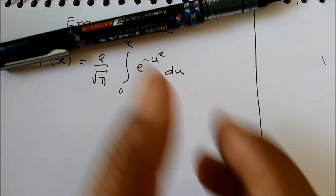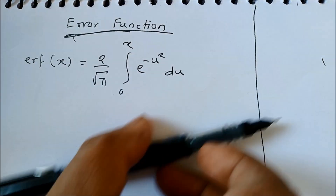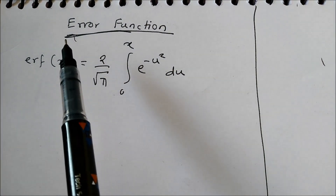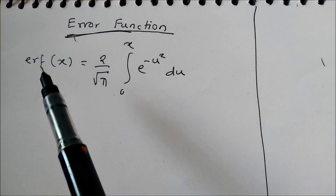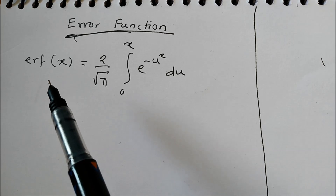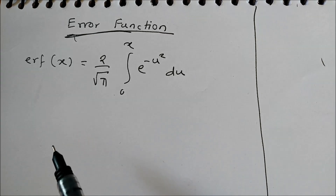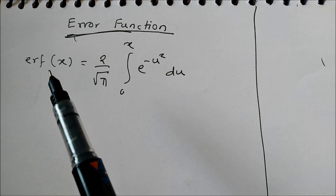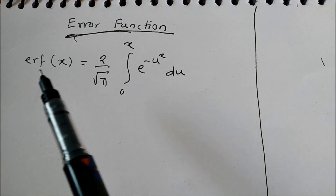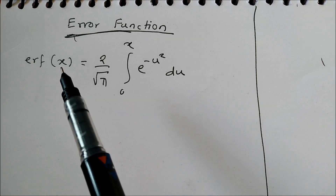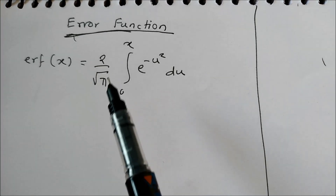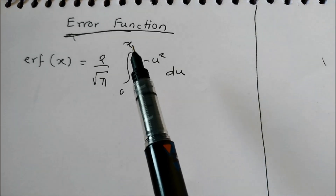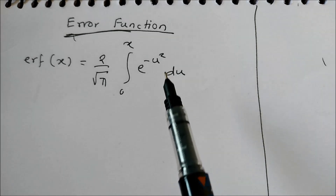Hello friends, today we will learn a new concept called the error function. This error function is useful in statistics and probability. The error function of x, denoted by erf(x), is given as 2 divided by the square root of pi, times the integral from 0 to x of e to the power minus u squared du.